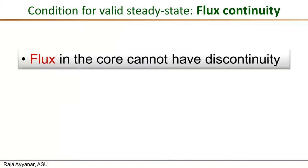The statement of the flux continuity rule is very simple. It states that the flux in the core of the transformer cannot have a discontinuity — the flux needs to be continuous. There cannot be step changes in the net flux in the core.